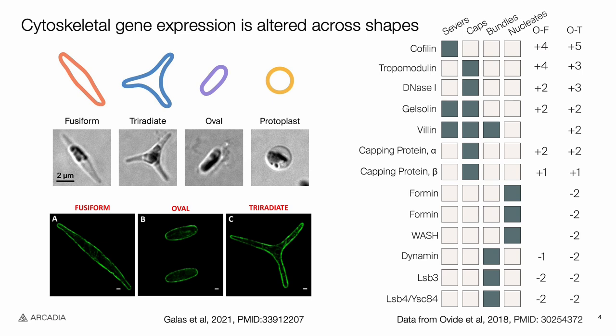Recent work suggests that the actin cytoskeleton might be contributing to cell shape determination. On the bottom left you can see these cells stained with phalloidin to visualize the actin cytoskeleton fluorescently. You can see F-actin is heavily localized near the cell cortex, possibly giving structure to these shapes.